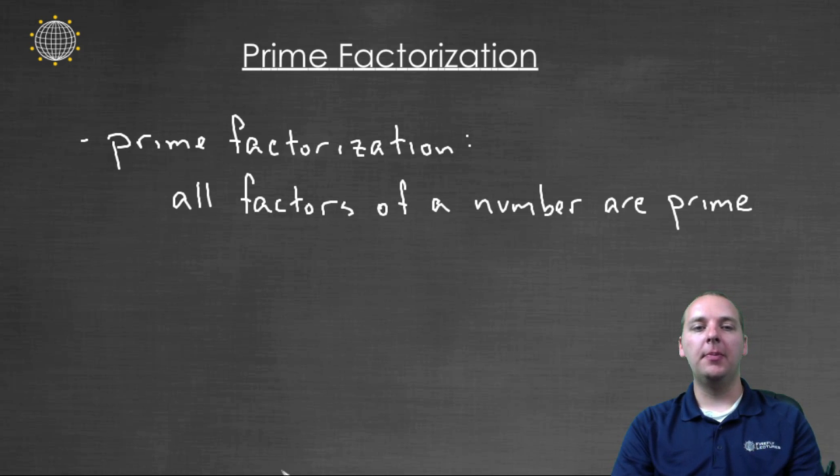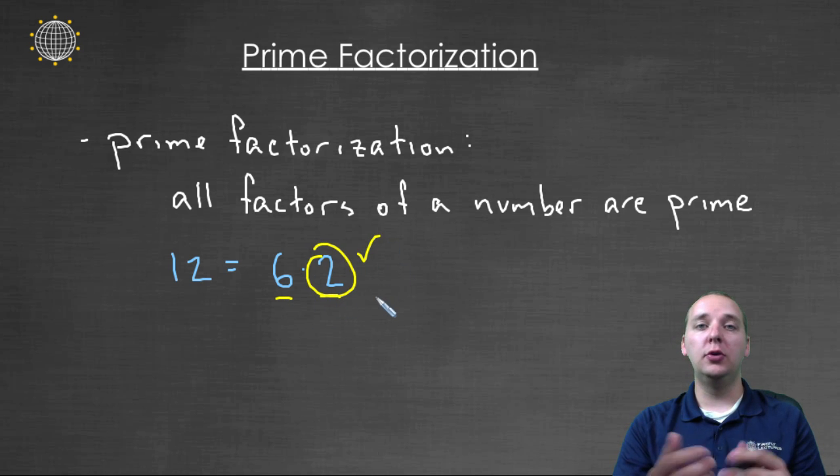Let me show you what I'm talking about. Let's say we have the number twelve. You can pick any factorization of twelve to begin with, it doesn't matter. Let's say six times two. Six times two does give us twelve. But now when I look at six and two, two is done. There's nothing more to do with two. Two is a prime number. You can't break two down into any smaller pieces.